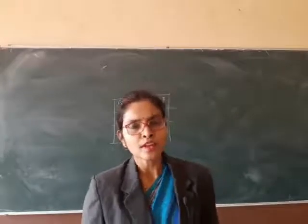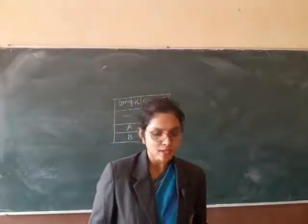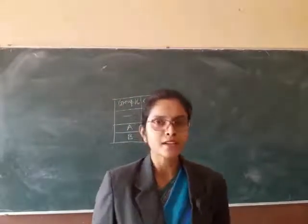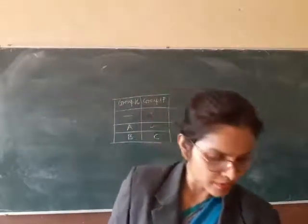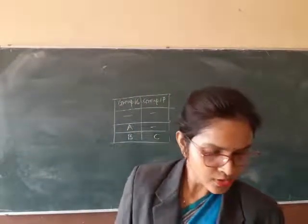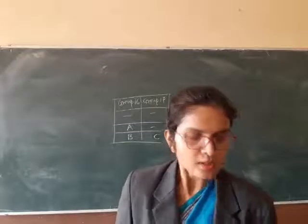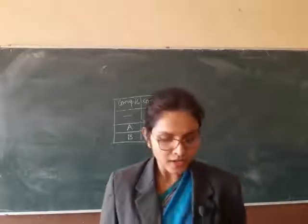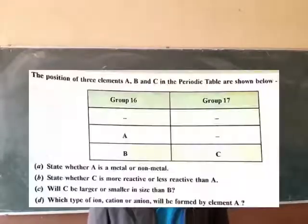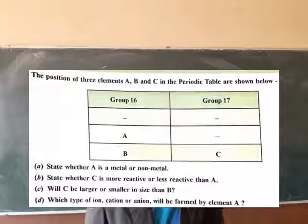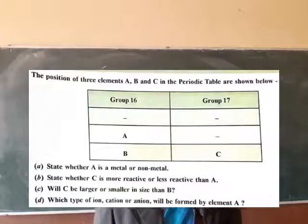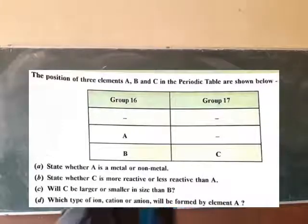Okay, students, today we are going to solve some questions related to chapter 5. So your first question is: the position of three elements A, B, C in the periodic table is shown below.